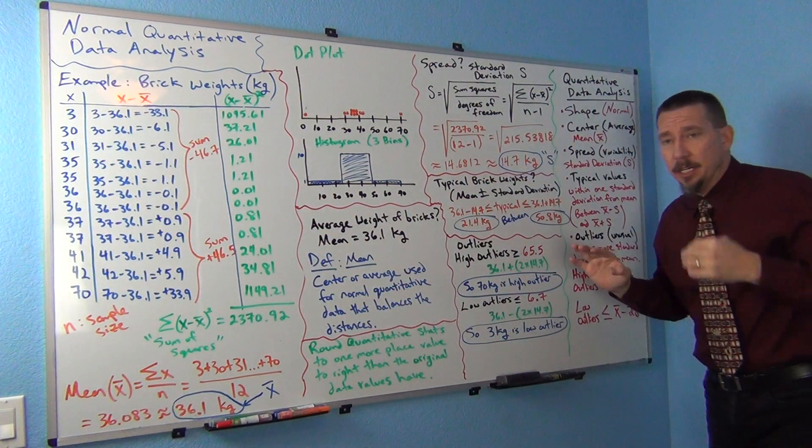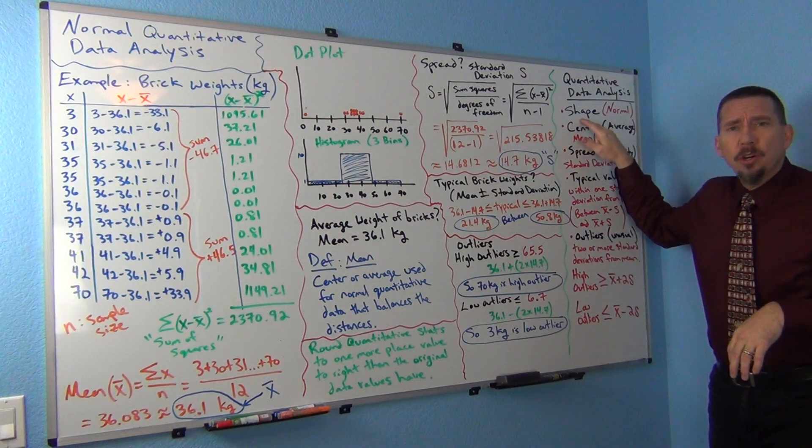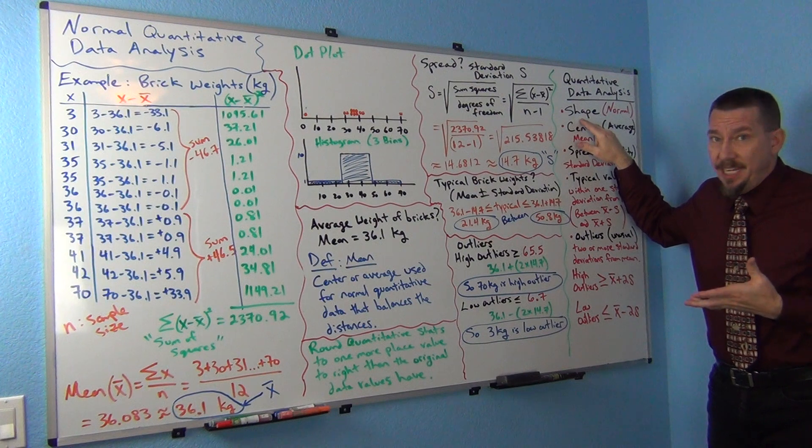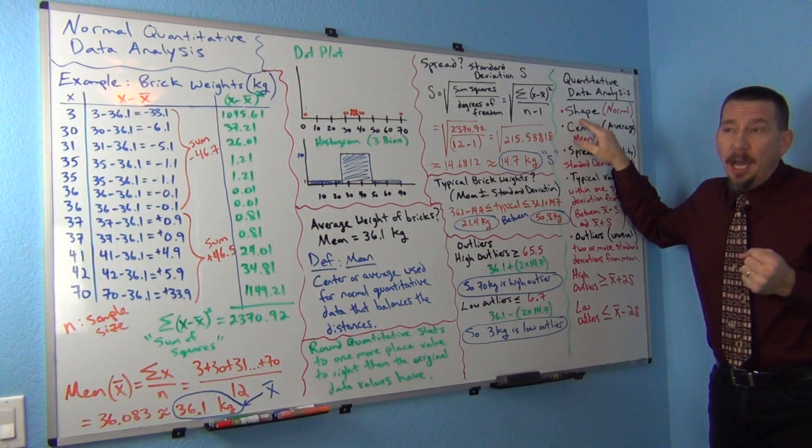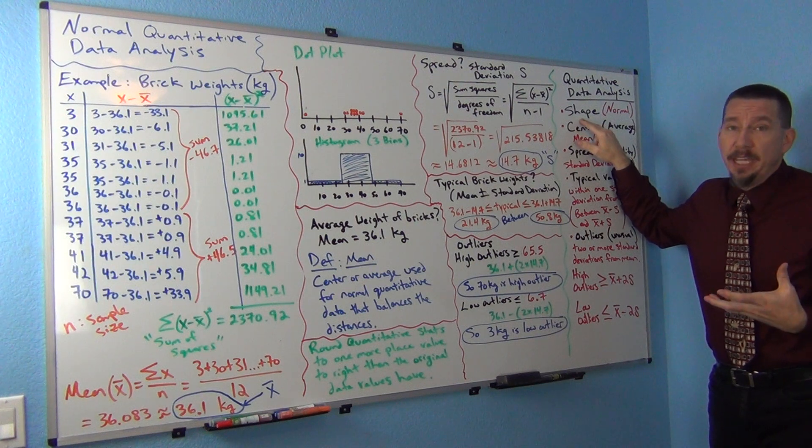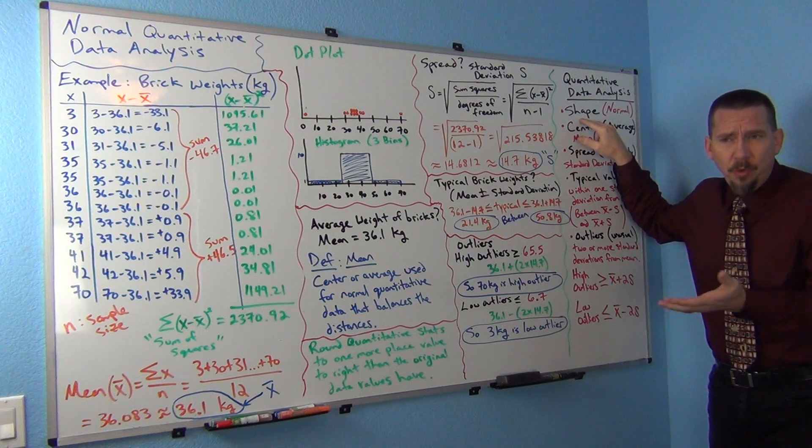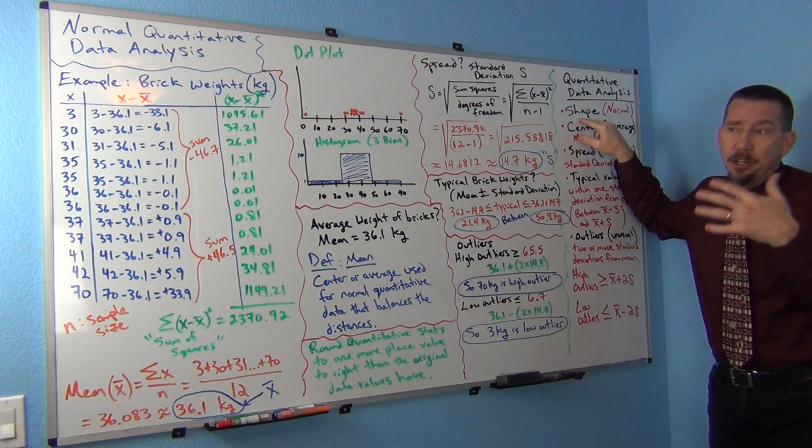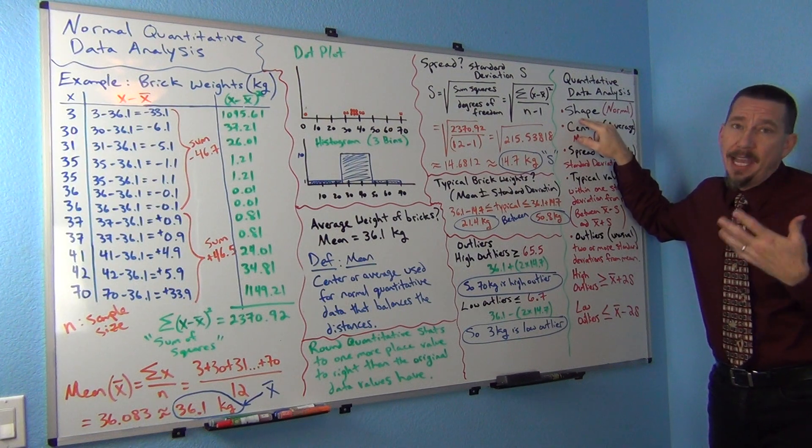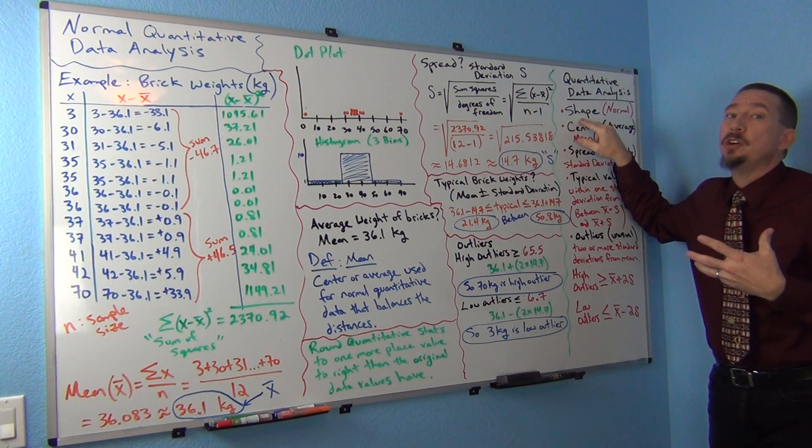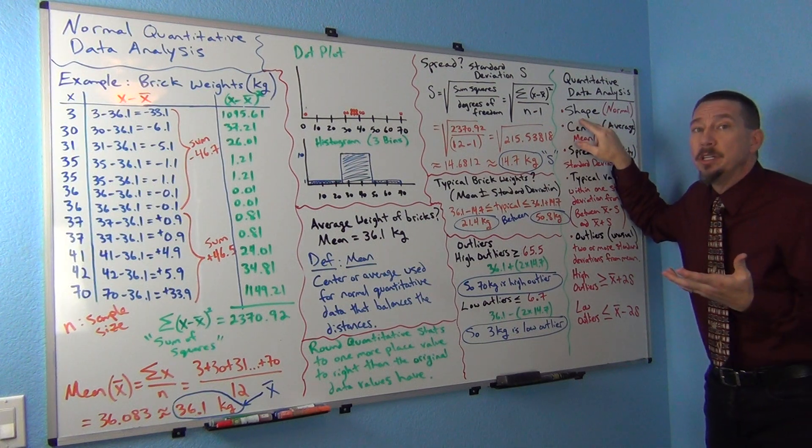I put them up here as a frame of reference. We want to know what's the shape of the data set. Quantitative data has a unique shape. Categorical data doesn't really have a shape because you can put the categories in any order and it makes the bar graph look different, but it doesn't really have a unique shape. Quantitative data actually has a shape and you want to know what the shape of your data is.